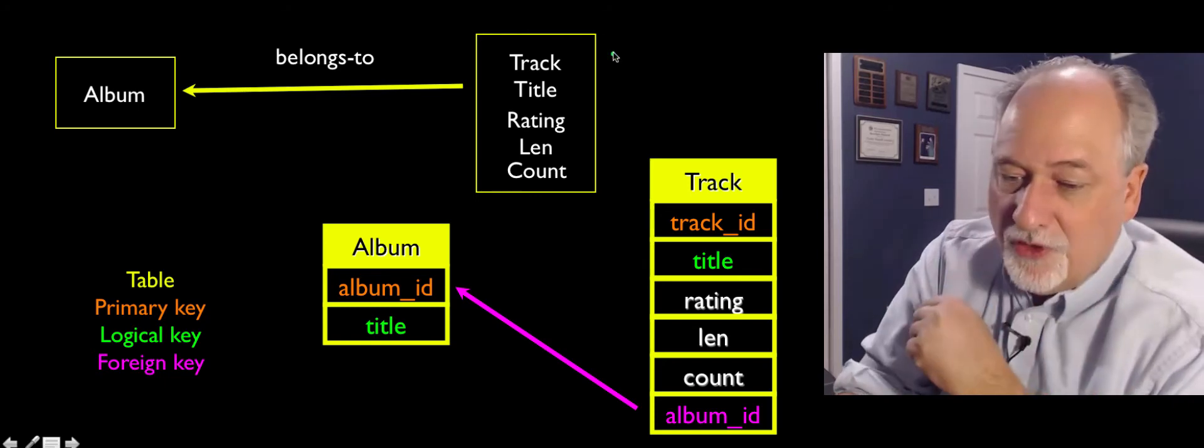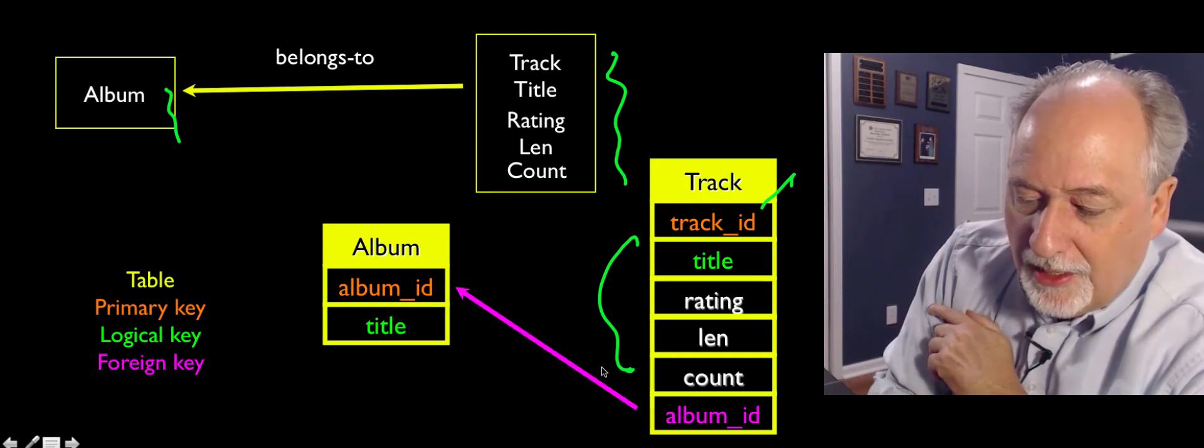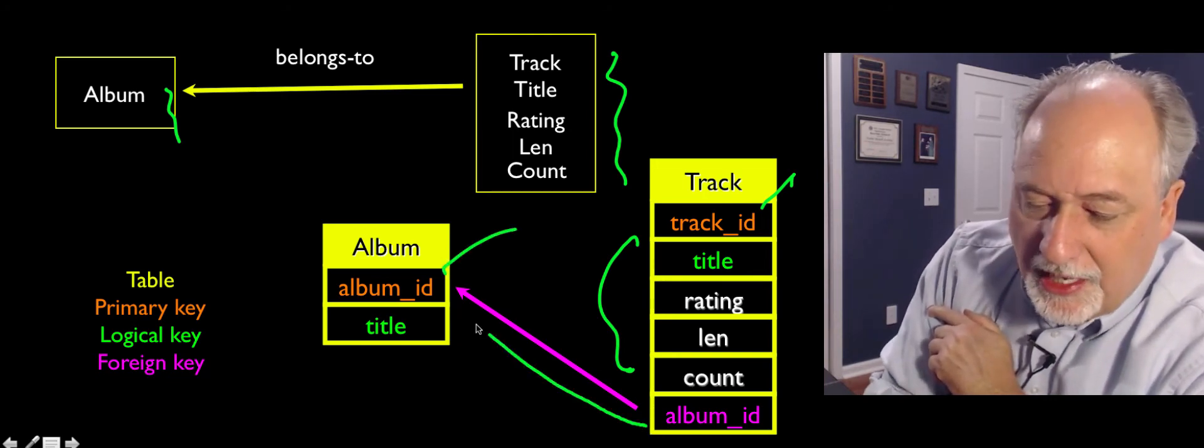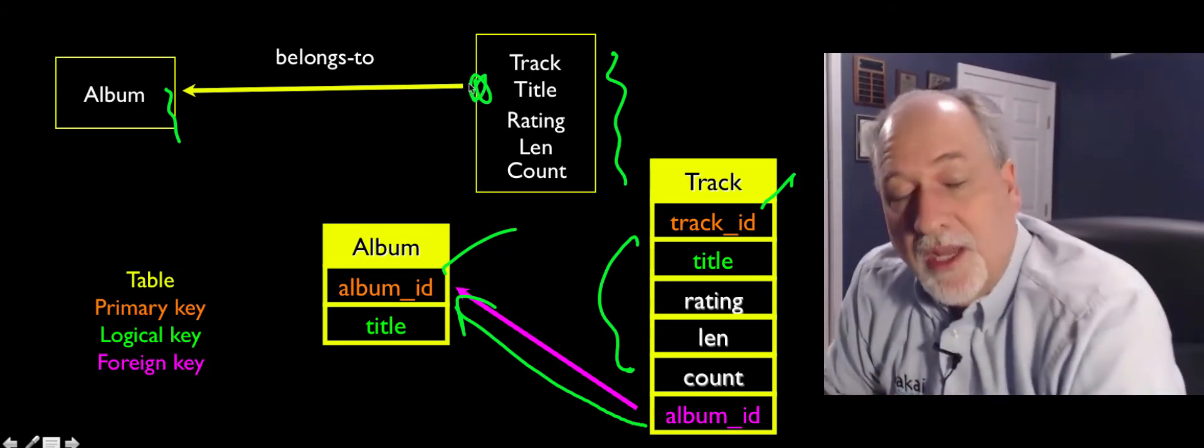And so you can see this as a kind of mechanical process, where you've got the stuff you wanna talk about, and then you put them in, and then you add a primary key to each of the tables. And then you add necessary foreign key columns as necessary, at the starting end of these arrows.